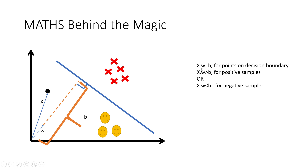The equation becomes: the projection of the vector onto the perpendicular is x dot w. If that projection equals b, the point is on the decision boundary. If it's greater than b, it's a positive sample. If it's less than b, it lies below the boundary — a negative sample. We take the dot product along the perpendicular as a standard reference because there are infinitely many points on the boundary to measure distance from. By projecting all points onto the perpendicular w and comparing distances, we get a consistent measure.